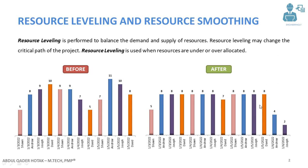As you can see, the project was supposed to be completed from January 3rd to January 5th. But now, when we have leveled the resources, it is going to continue from January 3rd to January 6th, which means that resource leveling will impact the critical path of the project.